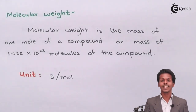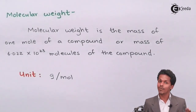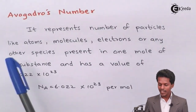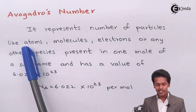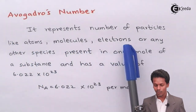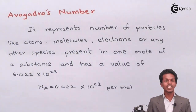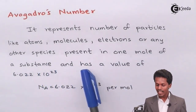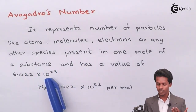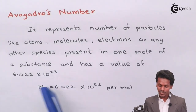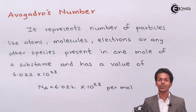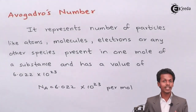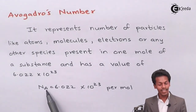Now, the final topic is Avogadro's number. Avogadro's number represents the number of particles — like atoms, molecules, electrons, or any other species — which has a particular mass in one mole of a substance, and has a value of 6.022 × 10²³. It is denoted by the symbol Nₐ.